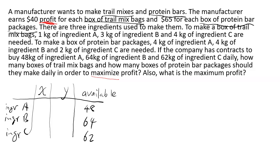To make X boxes of trail mix you require 1 kilogram for ingredient A, 3 kilograms for ingredient B, and 4 kilograms for ingredient C. Then you go on to fill in this column. Sometimes the wording is given so that you fill in the other direction, so you have to be careful. Make sure that when you fill in a number it is related to the correct ingredient.